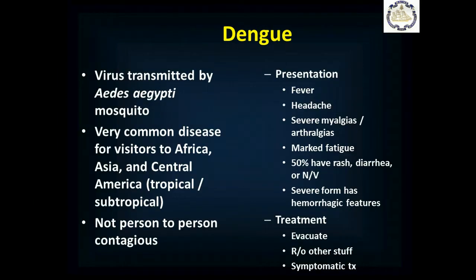Dengue fever is a virus transmitted by the Aedes aegypti mosquito, very common in travelers to tropical and subtropical regions. It is not person-to-person contagious — you must be bitten by the mosquito. Presentation typically includes fever and headache, severe muscle aches and pains, and fatigue. About half have rash or nausea and vomiting; about a third have diarrhea. In its severe hemorrhagic form there are petechiae and purpura, which is very bad. If they're really sick, evacuate. For mild cases, symptomatic treatment if you and medical control are convinced of the diagnosis.